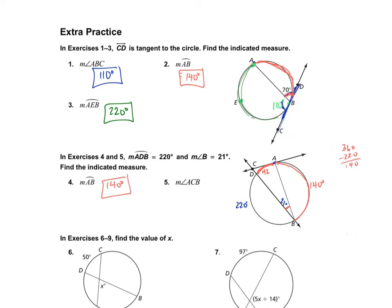Now I can find angle ACB using the outside formula: big arc minus small arc, half of that. The big arc is 140 and the small arc is 42. So angle ACB equals one-half of 140 minus 42. That's one-half of 98, which is 49 degrees.